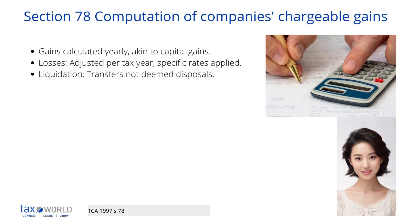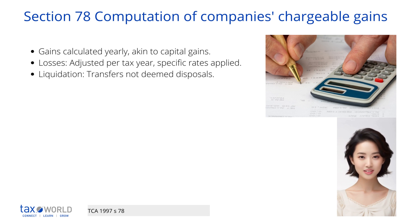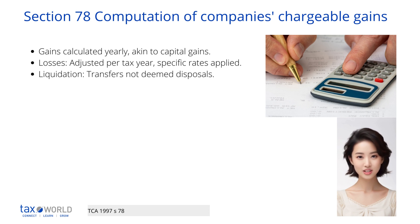If the accounting period crosses two financial years with different corporation tax rates, an assumed rate is used. This is determined by dividing the rates for the two financial years according to the length of the respective parts of the accounting period in each financial year.